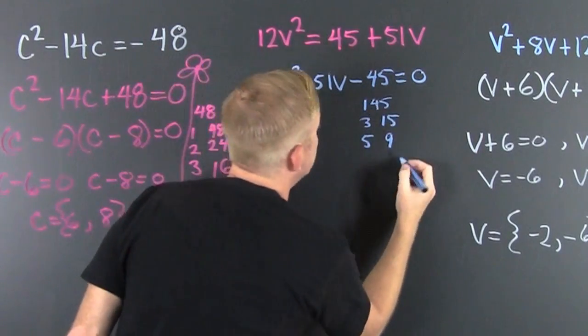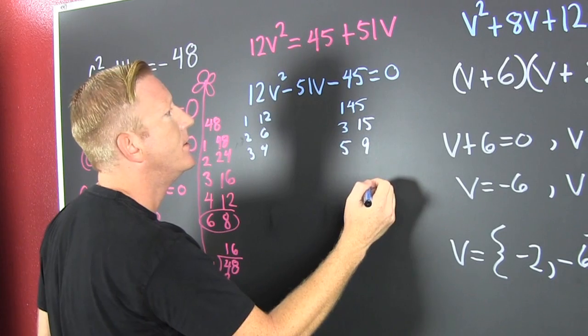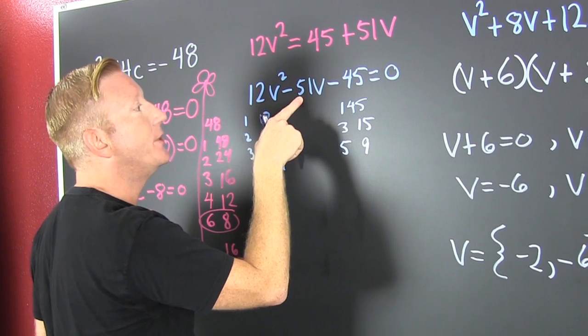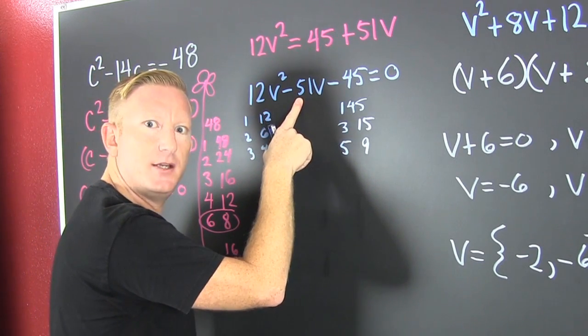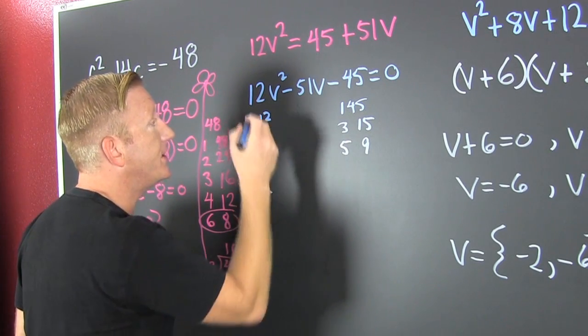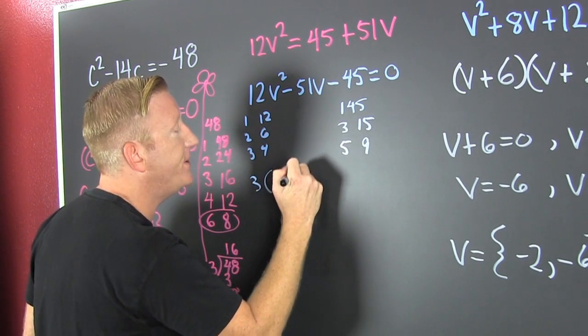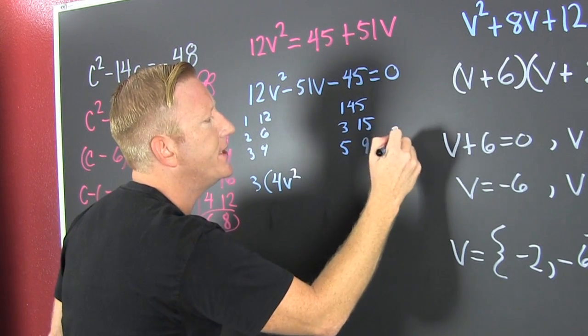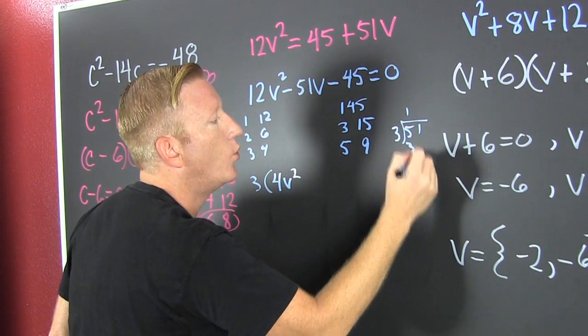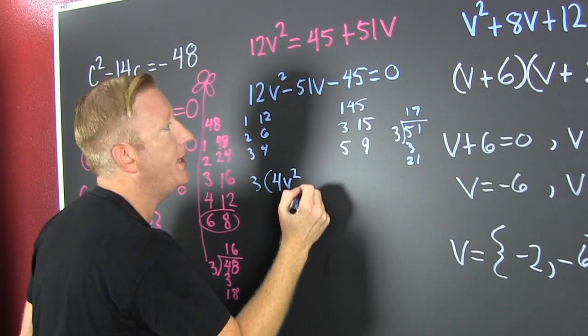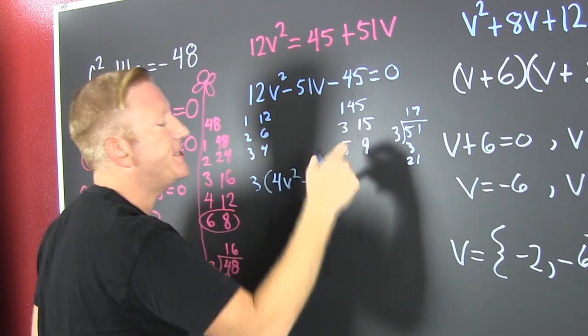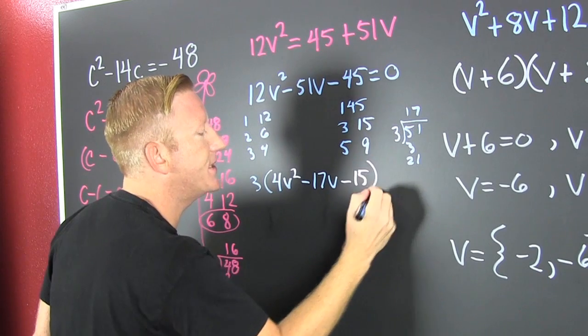So let's take the product of those two, the AC method this time. Do they have a common factor? Does 3 go into 51? 3 does go into 51. I can make the number smaller by taking out the common factor, so I take out 3. Left on the inside I have 4v squared. How many times does 3 go into 51? That's one time, and then that's 17, so that's minus 17v. And then 3 goes in there 15 times, so that's still gonna be equal to zero.